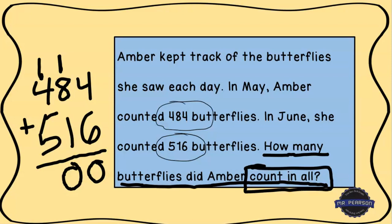1 plus 4 is 5, and 5 plus 5 is 10. There are no other place values to regroup to, so we write 10 right down here. Because this is now a four-digit number, I count over three places — one, two, three — and put a comma to indicate the thousands place. So 484 plus 516 equals 1000. The last thing we always want to do is label our answer, whether it's a sum, difference, product, or quotient.